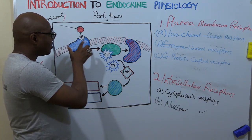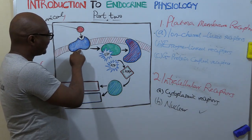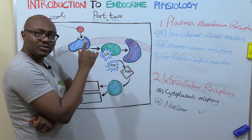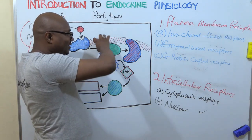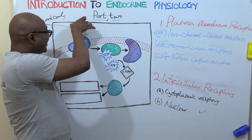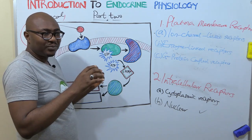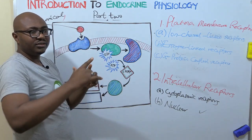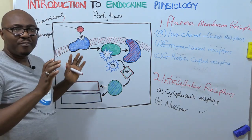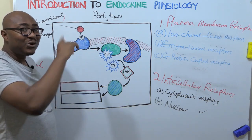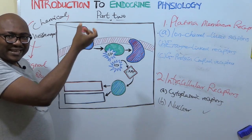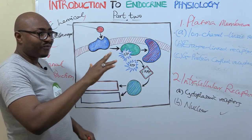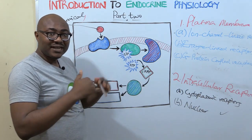For ion-channel-linked receptors: when the hormone binds to the receptor, the receptor is linked to a specific ion channel. When the hormone binds, there is a conformational change — one of the special characteristics of proteins — that can either open or close the ion channel. This leads to influx of the ions through that channel. When the channel closes, it stops the flow of ions. The flow of ions can stimulate membrane potentials and so on.